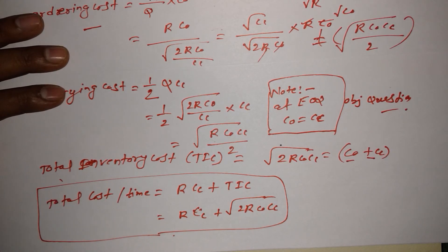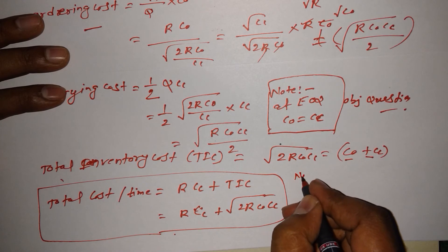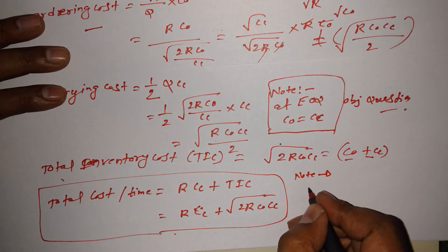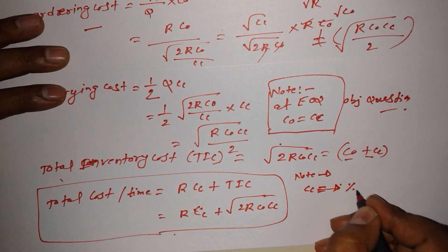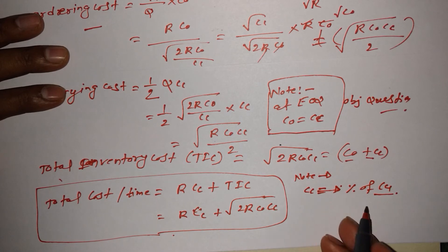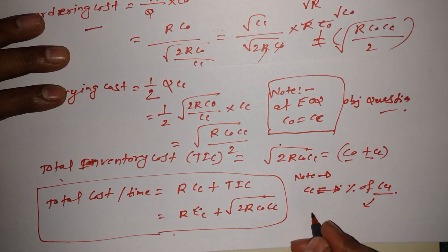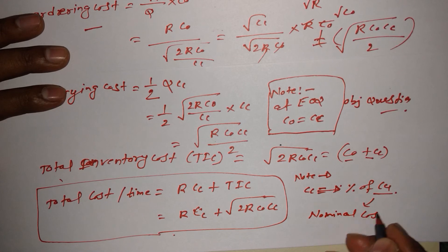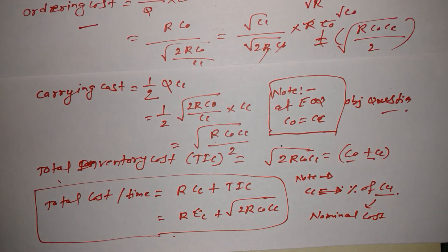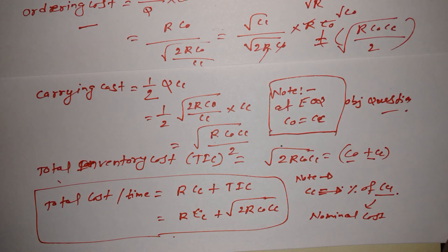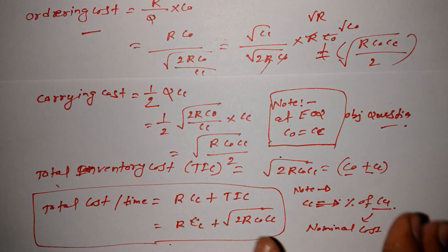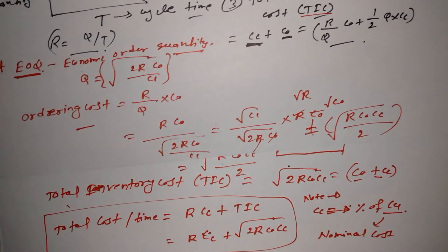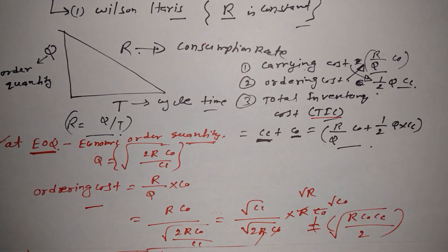One notable thing: carrying cost equals a percentage of CU, where CU is the nominal cost — also known as purchasing cost.